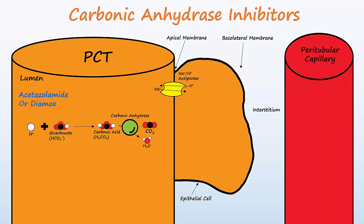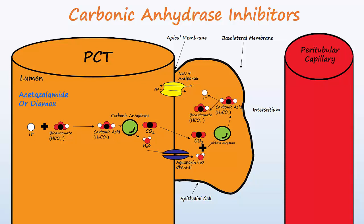Carbonic anhydrase converts the carbonic acid into carbon dioxide and water. Carbon dioxide is hydrophobic and crosses the apical membrane of renal tubular cells by way of simple diffusion, and water crosses via aquaporin channels. Inside the cell, the carbon dioxide and water are recombined by carbonic anhydrase to form carbonic acid, which then dissociates into bicarbonate and hydrogen ions. Hydrogen ions build up inside the cell and help drive sodium into the cell.